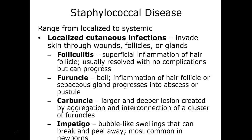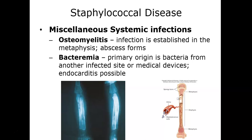Staphylococcus aureus can also progress from localized to much more systemic or deep-seated infections. These include osteomyelitis, which causes abscesses in the metaphysis of the bone, and bacteremia — remembering that the suffix '-emia' means it has spread in the blood. Bacteria spreading in the blood can actually get to the heart and cause a condition known as endocarditis.